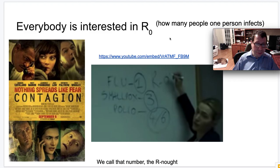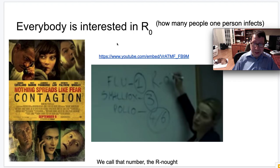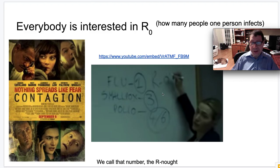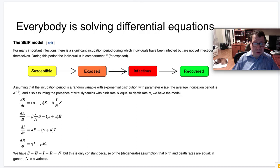I first learned about R-naught from the movie Contagion — maybe some of you have seen it. I've put together a video link so you can see the explanation of R-naught from that movie. Here you can see a discussion of how the flu infected one person on average per person, smallpox might be three, polio was four to six before it was eradicated, and the character says: 'We call this number the R-naught.' I wonder to this day why it's written like R-underscore-zero in LaTeX format.